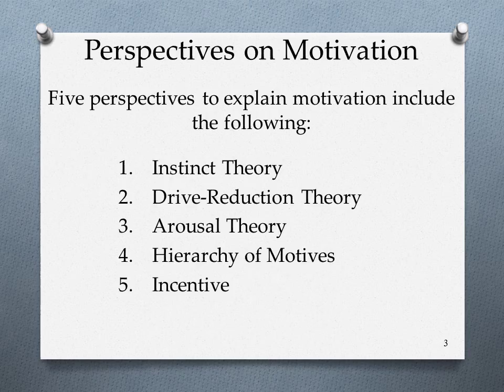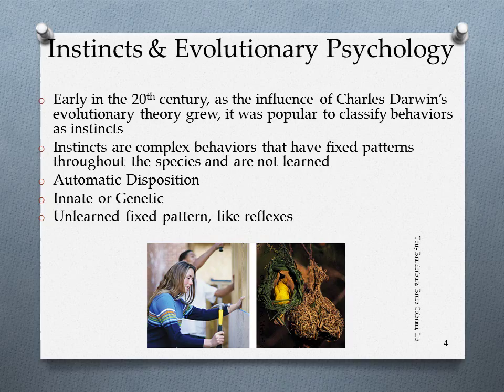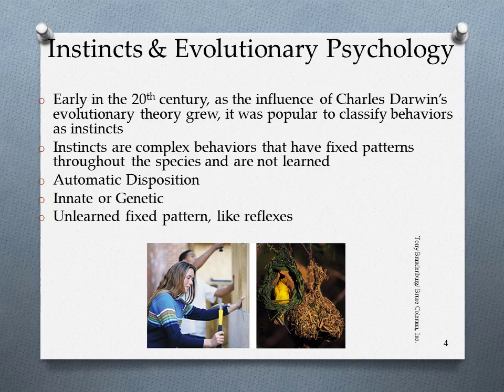The first is instinct theory, based on evolutionary psychology. In the early 20th century, as the influence of Charles Darwin grew, it was popular to classify behaviors as instincts. Instincts are complex behaviors with fixed patterns throughout a species that are not learned — they are innate or genetic, an automatic disposition we essentially inherit. Examples include reflexes, and babies instinctively knowing how to search for food.